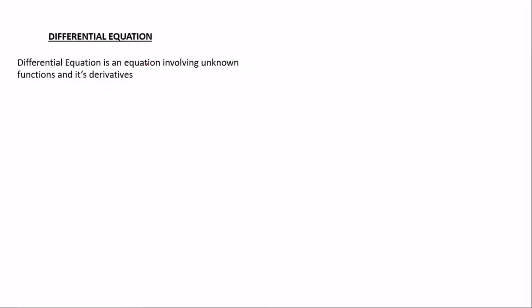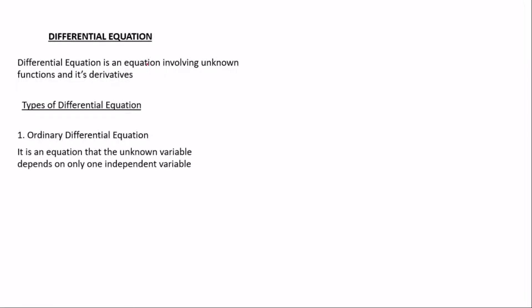We have two types of differential equations, but for this video I'm covering only one: the ordinary differential equation. The ordinary differential equation is an equation where the unknown variable depends on only one independent variable. For example, if you have dy/dx, the independent variable is x and the dependent variable is y — anything that happens to x also happens to y.